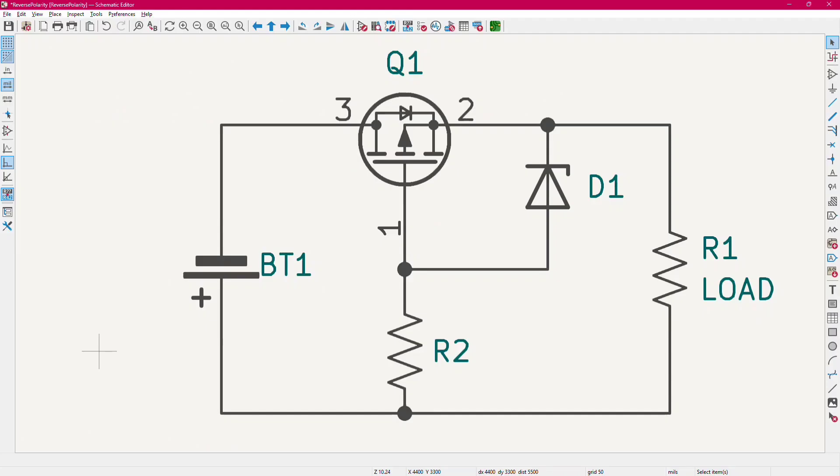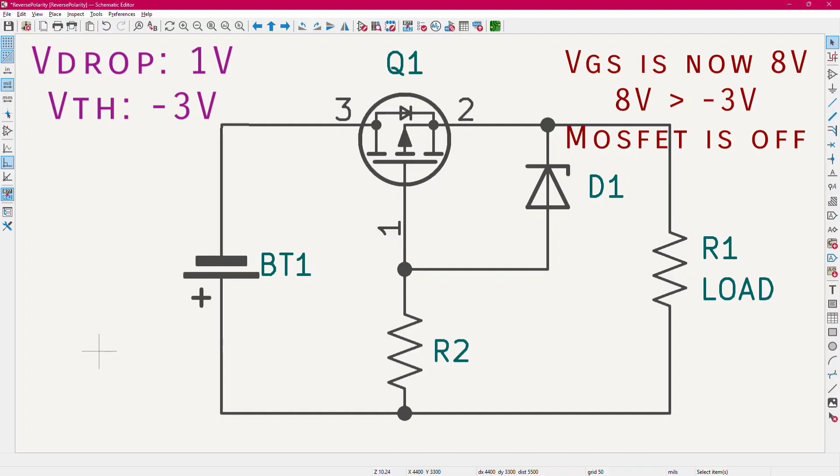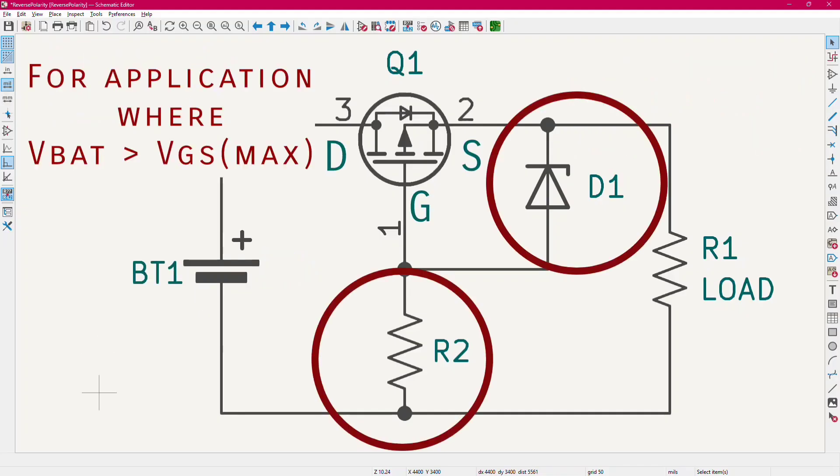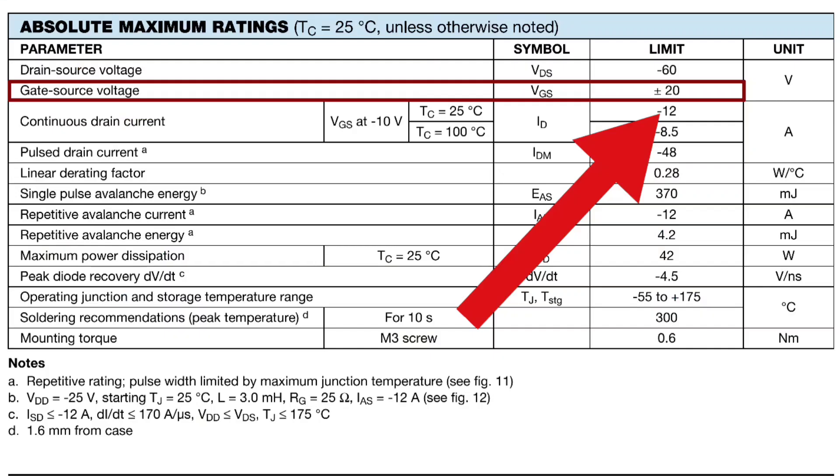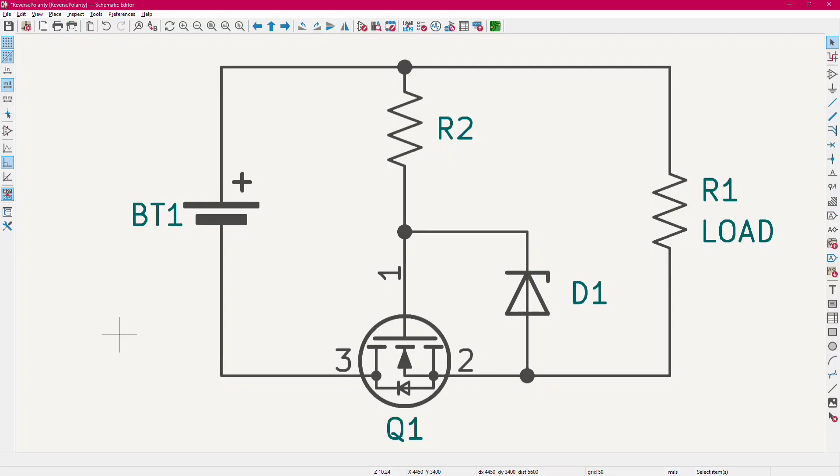When connected in reverse, the gate voltage is more positive than the one on the source. So the MOSFET does not turn on and we have no current flow. The zener and resistors are here to protect the gate when the battery voltage is higher than the maximum allowable VGS voltage. Although less used, you can also use an n-channel MOSFET, it will work just fine.